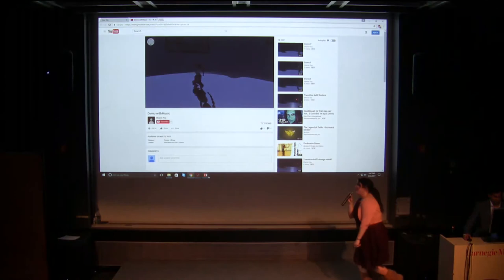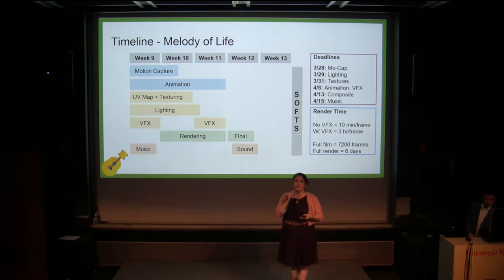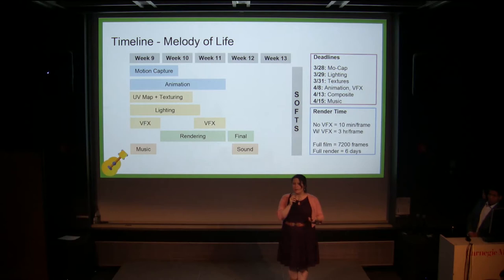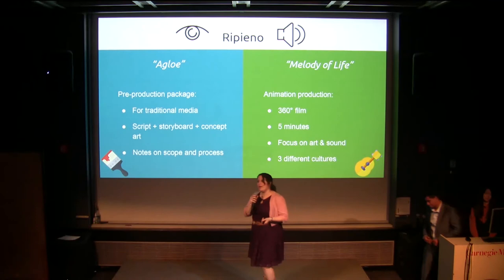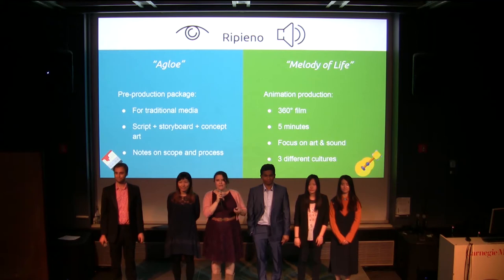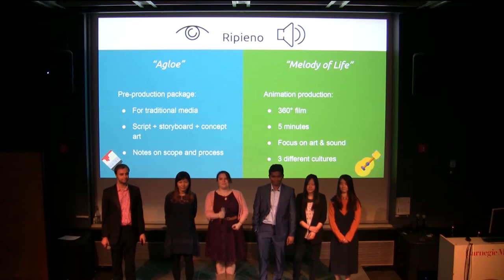Moving into the coming weeks, we are preparing around the notion of being ready by softs with the full film. What this means is that by week 11 we're locking in our visuals to allow week 12 specifically for rendering. We have left week 13 as a buffer because we anticipate that we will probably run into technical issues and we want to allow that time just in case. In summary, we are RePiano. We are making two products: Aglo, our pre-production package, and Melody of Life, our 360-degree animated film. Thank you very much, we're happy to take your questions.